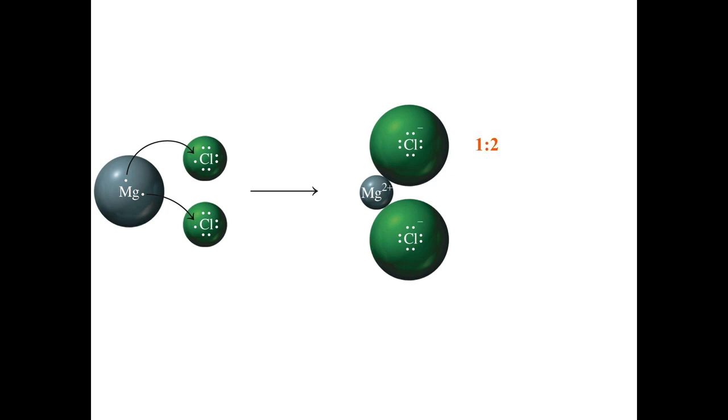In this example, the ratio is one to two. For every one magnesium ion, there are two chloride ions. And the reason for this, again, is to have a neutral charge balance.